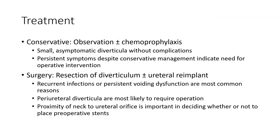Treatment options include: conservative observation with or without chemoprophylaxis for small asymptomatic diverticula without complications. Persistent symptoms despite conservative management indicate a need for operative intervention. Surgery involves resection of the diverticulum with or without ureteral reimplantation. Recurrent infection or persistent voiding dysfunction are the most common reasons for surgery. Proximity to the ureteral orifice is important in deciding whether to place preoperative stents.